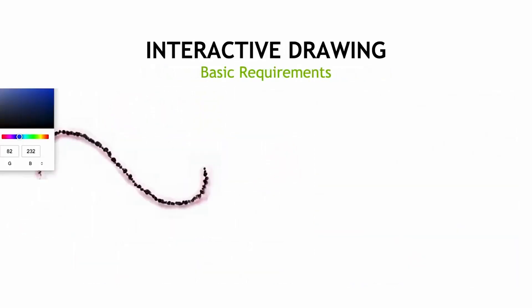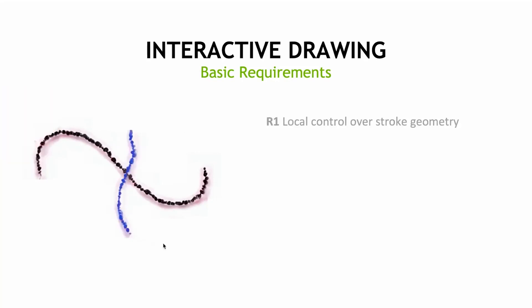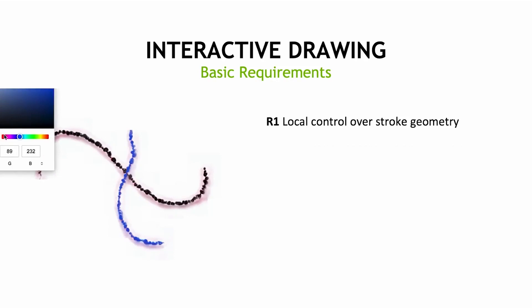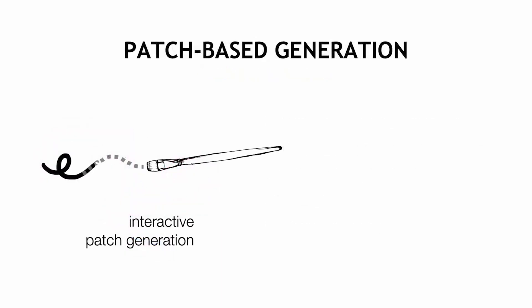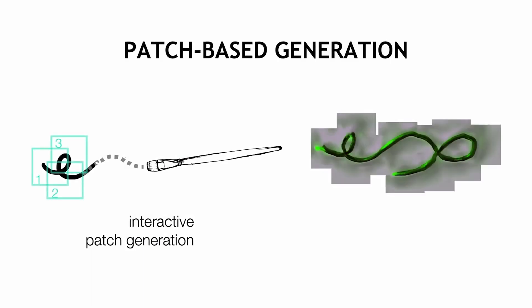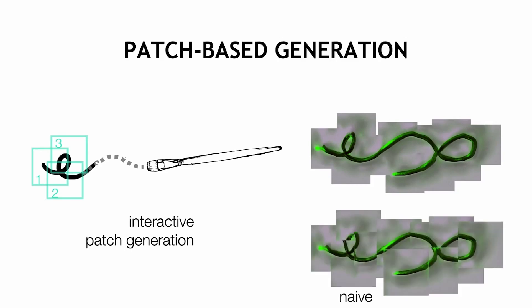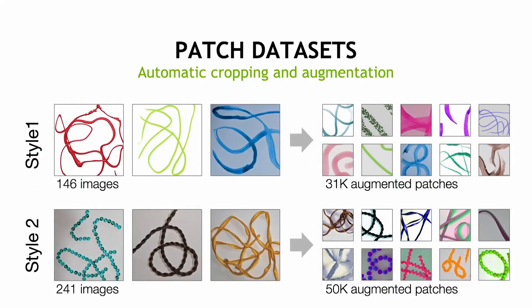Our system supports the basic requirements of any drawing interface, such as local control over stroke geometry, background separation and stroke compositing, ability to change brush color, as well as generation on any canvas size and interactive drawing. In order to allow generation on any canvas size, our generator operates on the patch level. We additionally develop a method to allow seamless strokes using a patch-based approach as opposed to a naive implementation. To train a patch-based generator, we break down our style datasets into sets of patches used for training.